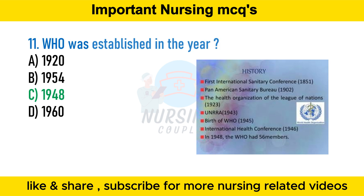WHO leads global efforts to expand universal health coverage, directs and coordinates the world's response to health emergencies, and promotes healthier lives from pregnancy care through old age. WHO's triple billion targets outline an ambitious plan for the world to achieve good health for all using science-based policies and programs.